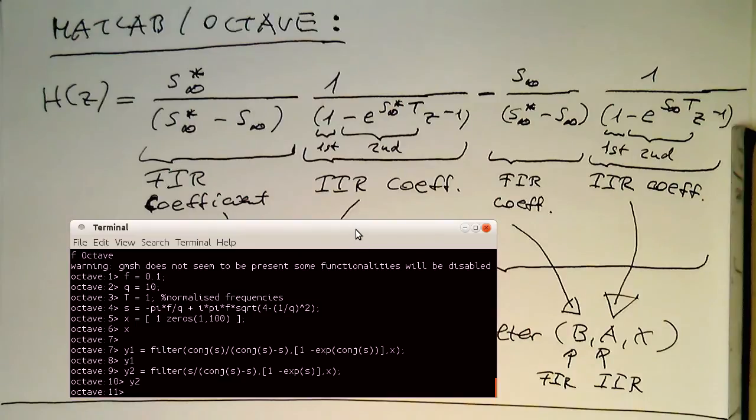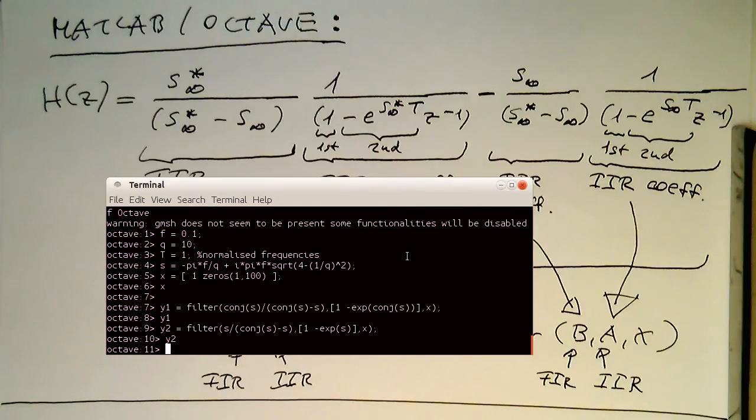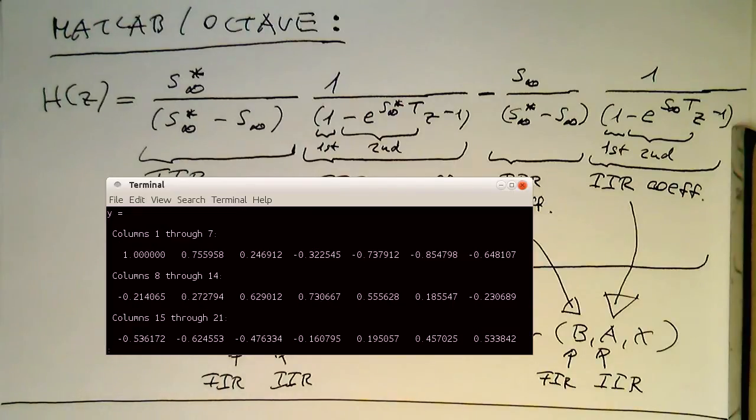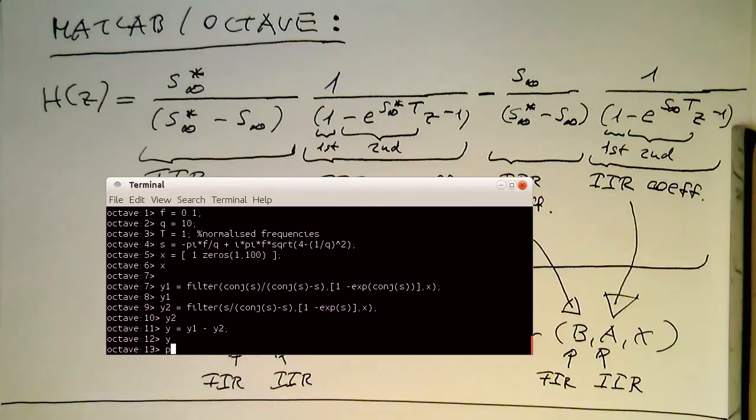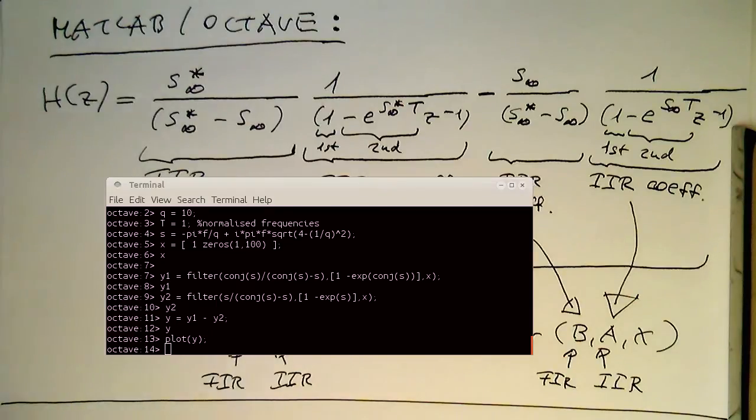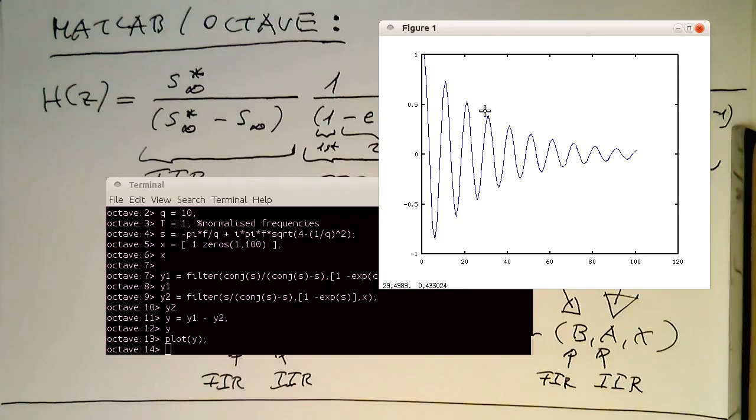And so now it's the last step. What we need to do is we just need to subtract these two filter responses from each other. So our final filter response is then Y1 minus Y2. And so let's see if this gives us the desired result. So we see the values are now real again. And so the complex values cancel out. So now we can plot this. And this is then here our impulse response created by the impulse invariance method.